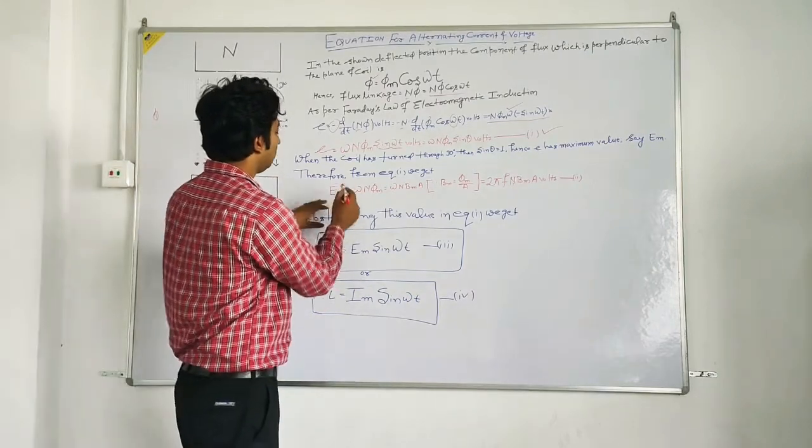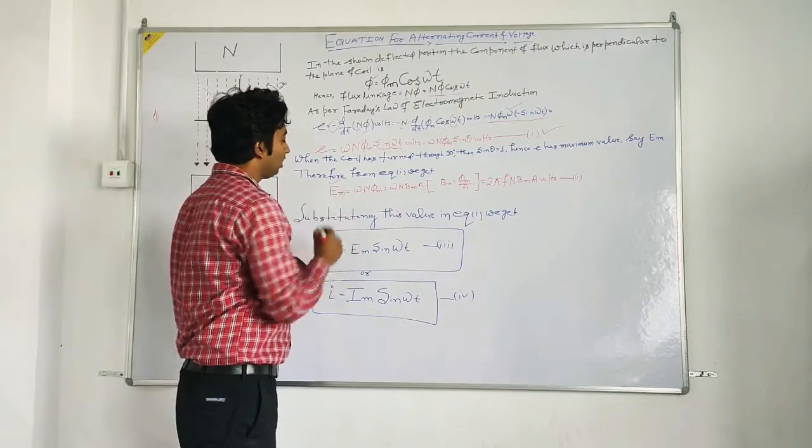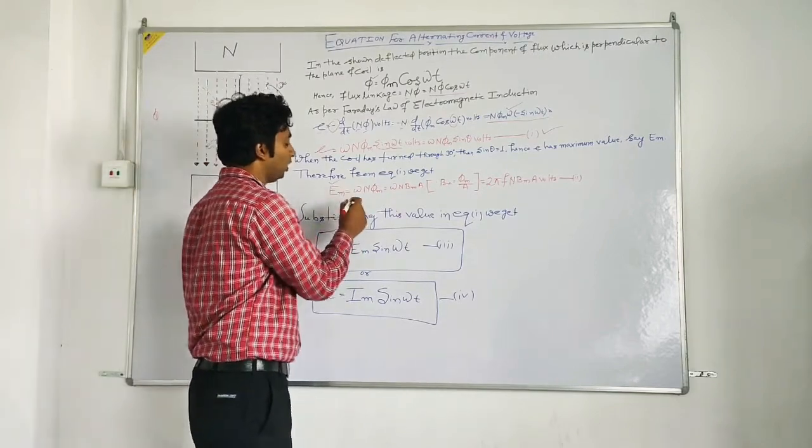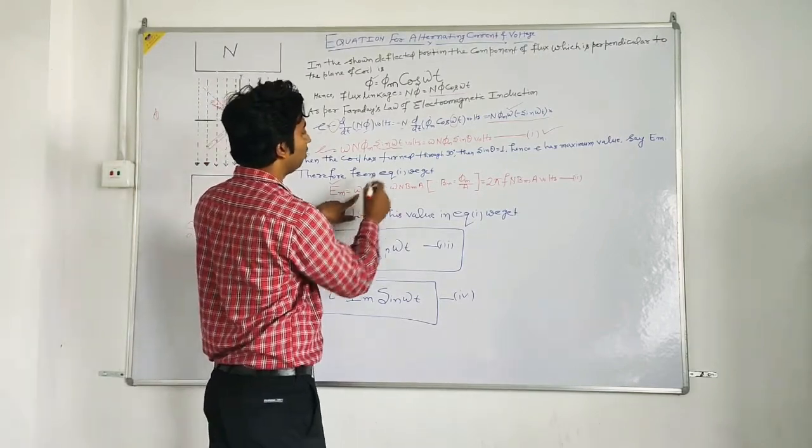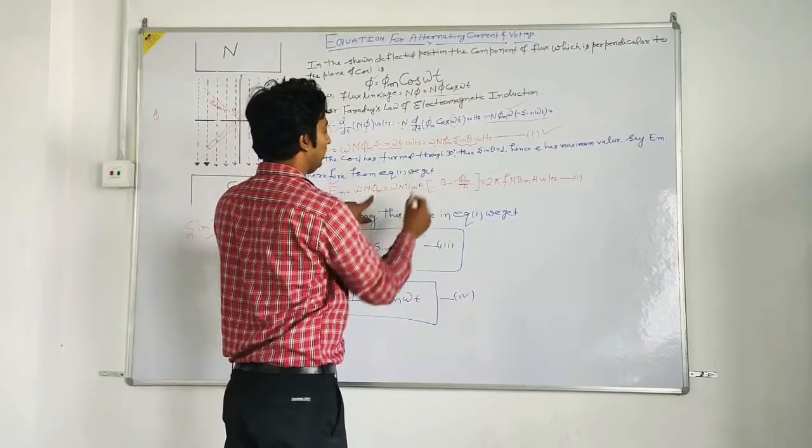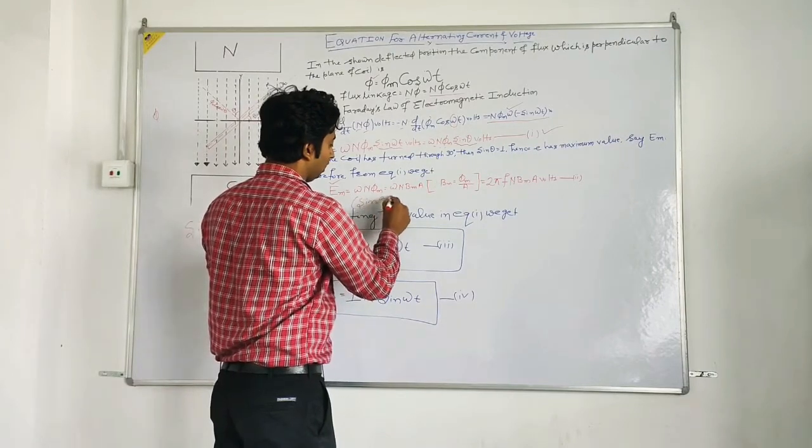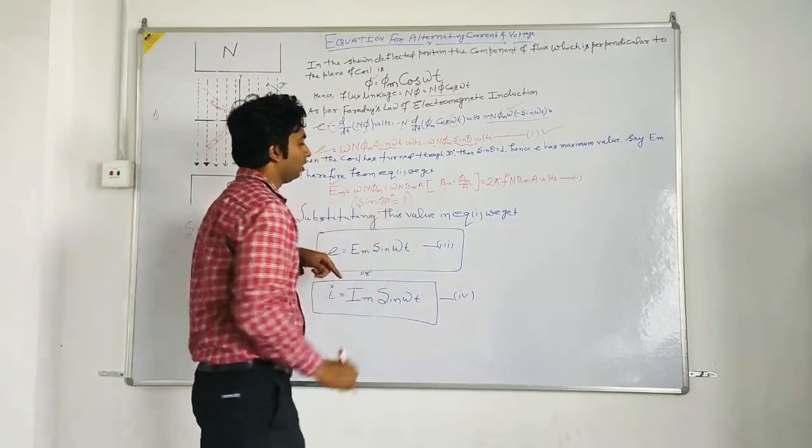So now the equation will become em, em stands for the maximum induced emf. So em equal to omega n phi m as sin 90 degrees is equal to 1.